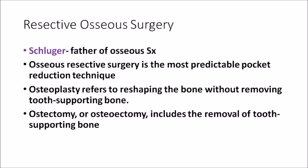Now let us see some points about resective osseous surgery. The father of osseous surgery is Schluger — the same Schluger associated with Sugarman and Schluger bone files. Osseous resective surgery is the most predictable pocket reduction technique — more predictable than all other regenerative techniques. You have to know the difference between osteoplasty and ostectomy. Osteoplasty is only a reshaping of the bone without removing any tooth-supporting bone, whereas ostectomy includes the removal of tooth-supporting bone.